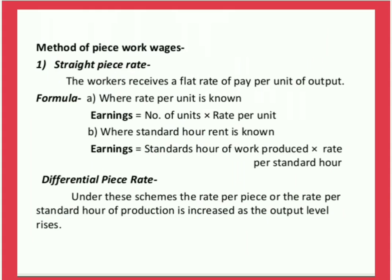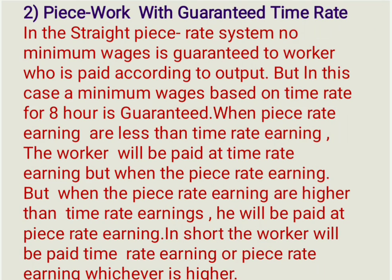Under this scheme, the rate per piece or the rate per standard hour of production is increased as the output level rises. Second method: Piece Work with Guaranteed Time Rate. This is to safeguard worker earnings when there is a daily shortage of tools, breakdown, etc., which make it difficult for the worker to earn more.